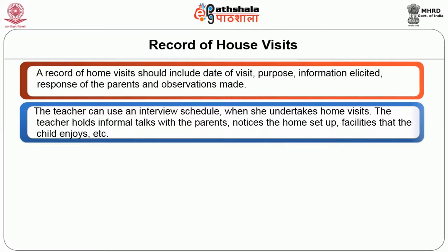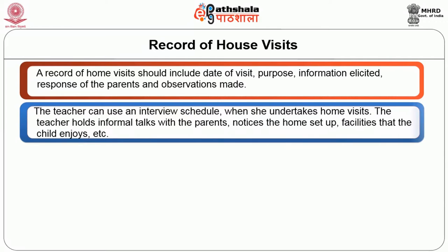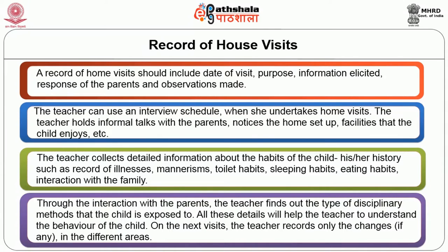The teacher collects detailed information about the habits of the child, his or her history such as record of illnesses, mannerisms, toilet habits, sleeping habits, eating habits and interactions with the family. Through interaction with the parents, the teacher finds out the type of disciplinary methods the child is exposed to. All these details will help the teacher to understand the behaviour of the child. The background information can provide a whole picture of the child and his family. On the next visit, the teacher will record only the changes if there are any.